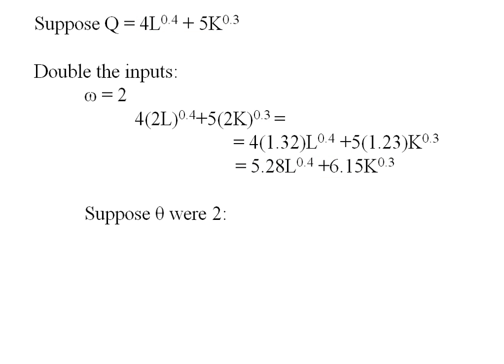What I like to do in this situation is say okay well what if theta were exactly 2? What would my production function look like? Well 2Q would be 2 times that right hand side of my original production function. And that I can easily distribute in getting 8L to the 0.4 plus 10K to the 0.3.